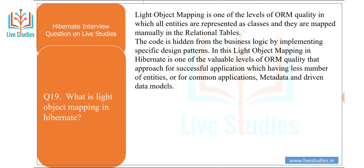Next question: what is light object mapping in Hibernate? Light object mapping is one of the levels of ORM quality in which all entities are represented as classes and are mapped manually to the relational table. The code is hidden from business logic by implementing a specific design pattern. This lightweight mapping in Hibernate is valuable for successful applications that have a smaller number of entities, common application metadata, and data type models.